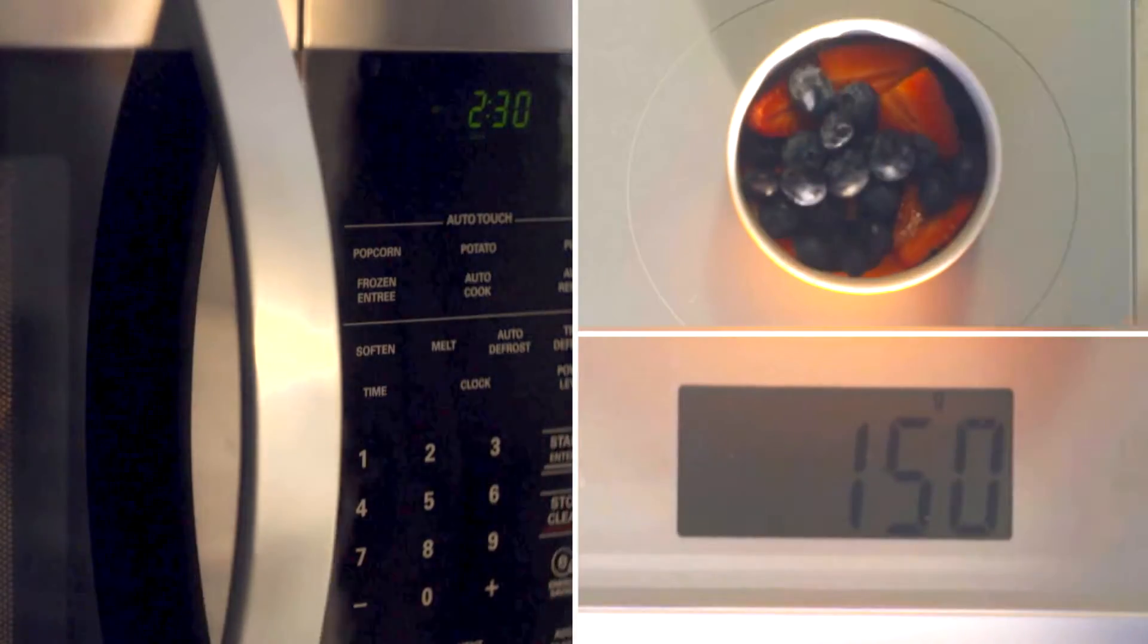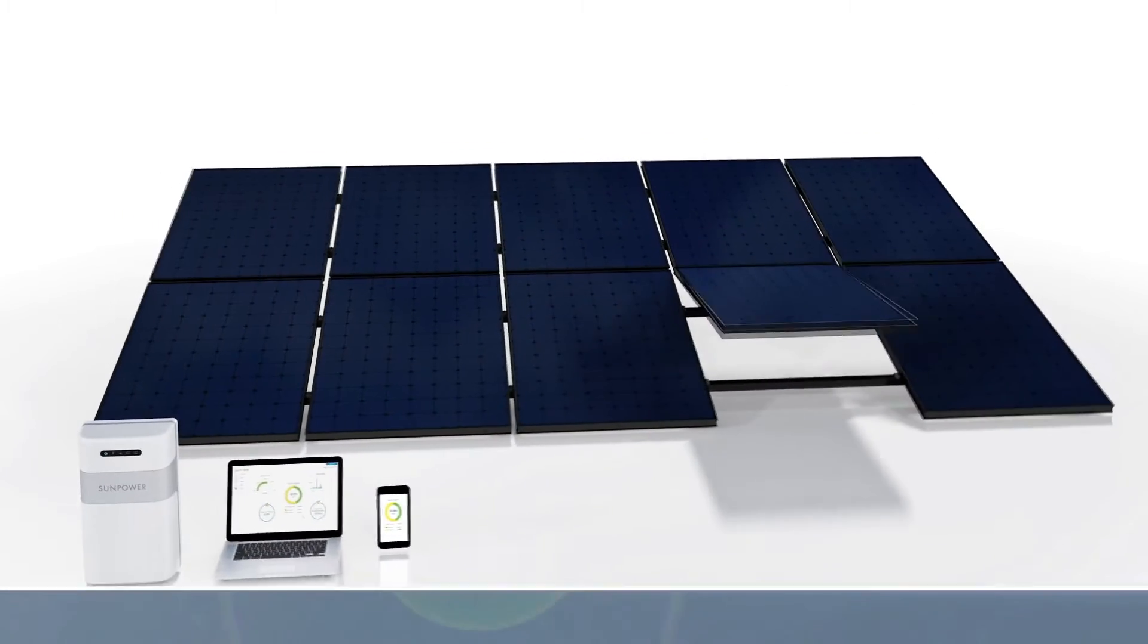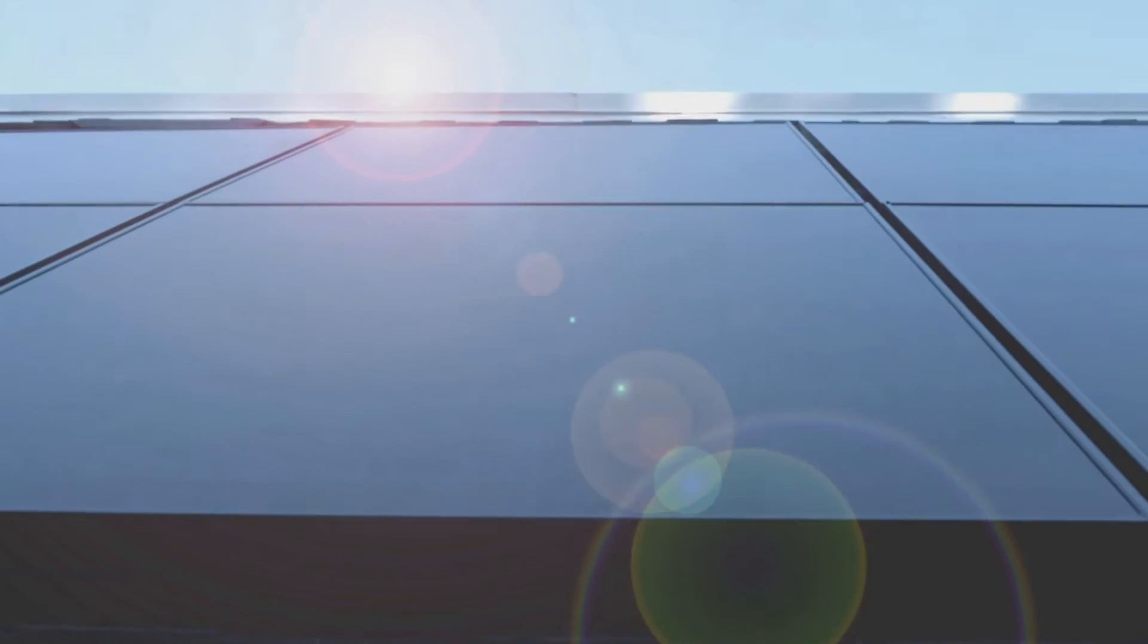When it comes to powering your home, SunPower Equinox just works. It's the only complete home solar system with everything designed to work perfectly together, from sun to switch.